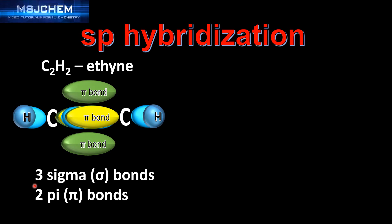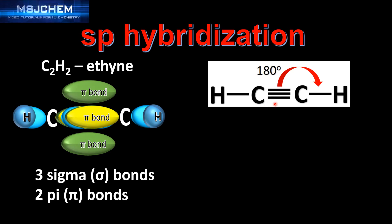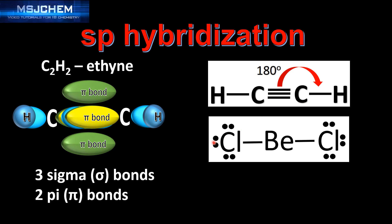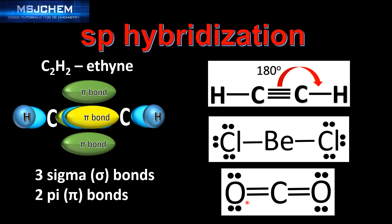The two pi bonds are formed by the sideways overlap of the unhybridized P orbitals on the carbon atoms. The two pi bonds are at right angles to each other, represented by the green area of electron density above, below, and on opposite sides of the sigma bond between the two carbon atoms. SP hybridization results in a 180 degree bond angle. Other molecules with SP hybridization are BeCl2 and carbon dioxide, CO2, both of which have a linear geometry and a 180 degree bond angle.